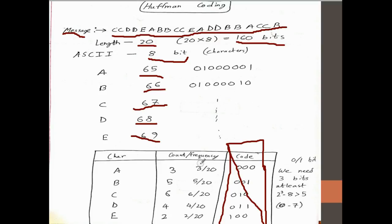Now we create a table to count frequency. We need this part, at least we need this part. So in the above message we have five characters: A, B, C, D, and E.